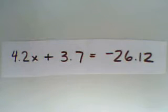The equation we're working with today, 4.2x plus 3.7 equals negative 26.12.